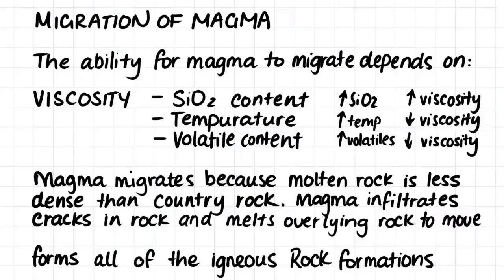The silica content, temperature, and volatiles decide the viscosity of the magma, which decides how the magma is able to migrate. This then decides whether the magma will be able to reach the earth's surface and create extrusive igneous rock — which will either be explosive or flow easily — or whether the magma is unable to reach the surface and therefore creates an intrusive igneous rock formation.